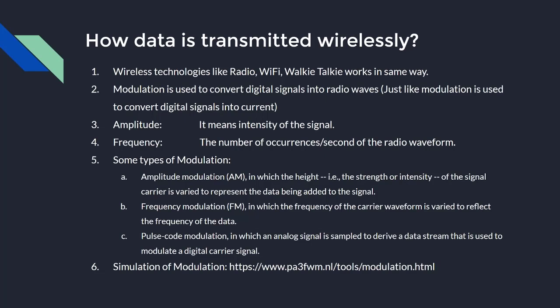Before looking at modulation, we need to understand how digital data — zeros and ones — and voices get converted to a radio waveform. Radio waves are generated by devices called modems, which are present at radio stations or in your home Wi-Fi router. Modems use modulation and demodulation techniques to generate radio waveforms from analog voice or digital data.